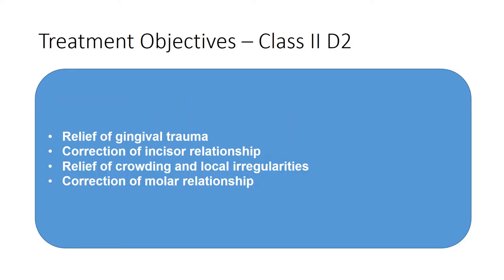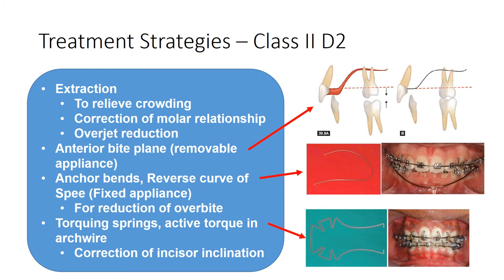The treatment objectives in class 2 division 2 are: to achieve relief of gingival trauma caused by the deep bite, to correct the incisor relationship, to relieve crowding and correct local irregularities, and to correct the molar relationship. Extraction helps relieve crowding, corrects molar relationship, and assists in overjet reduction. Although class 2 division 2 has no initial overjet, once the incisors are corrected to their normal inclination, an overjet opens up and must be accommodated.